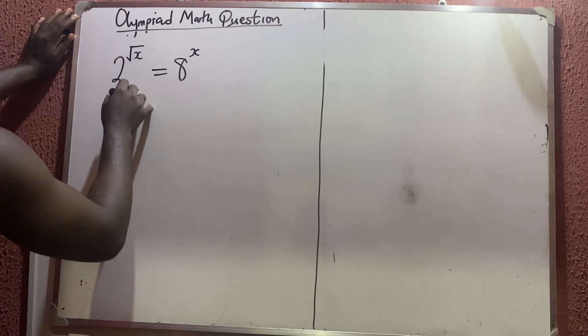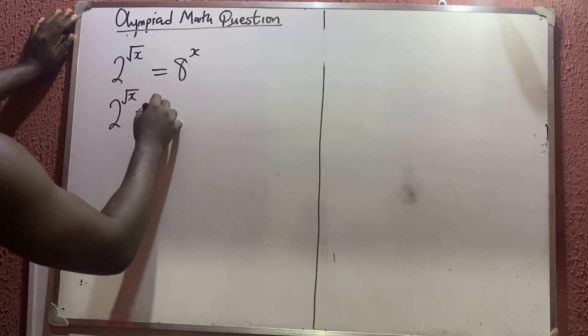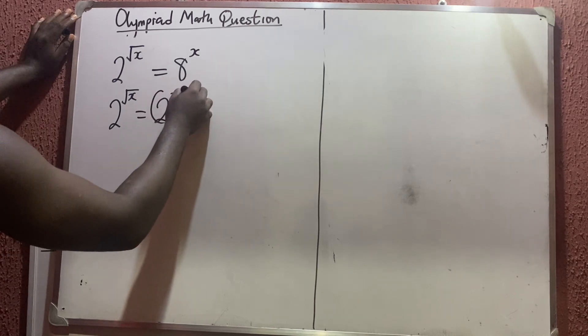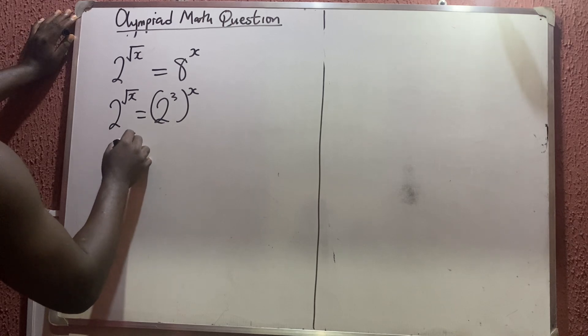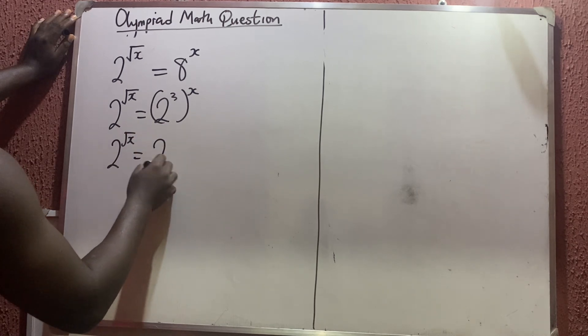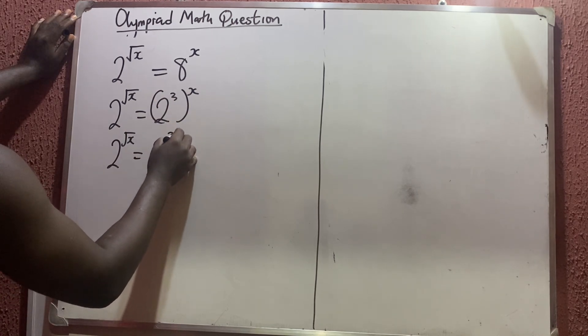So this is 2 raised to the power root x is equal to 2 raised to the power 3. Don't forget it has x. So this is now 2 raised to the power root x is equal to 2 raised to the power, this time to give you 3x.